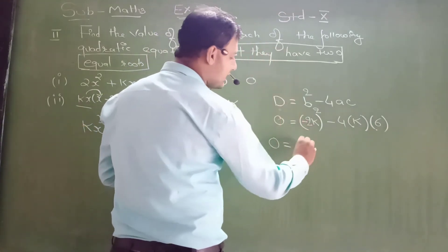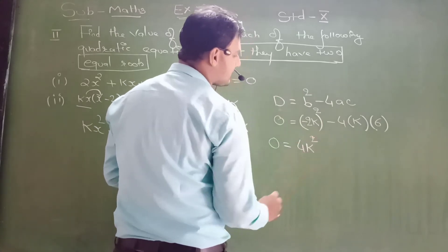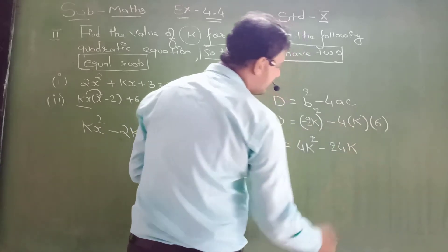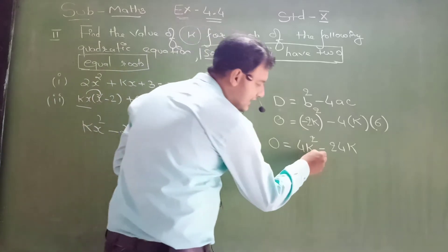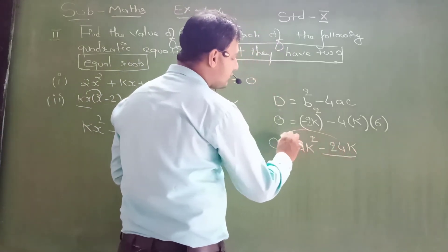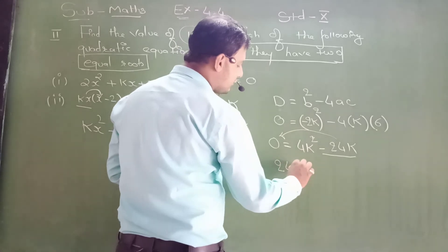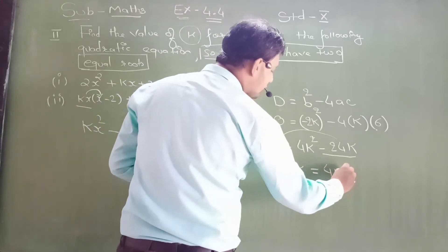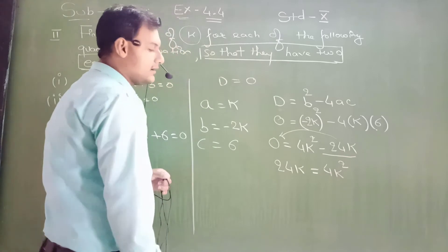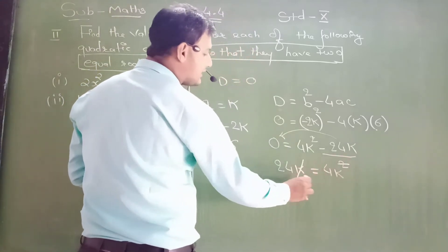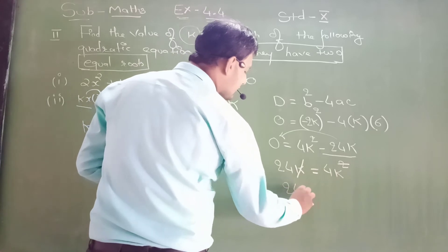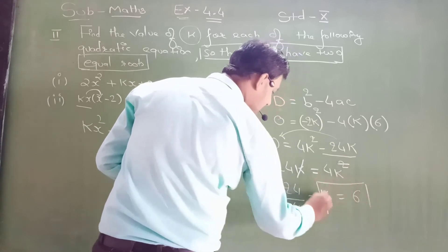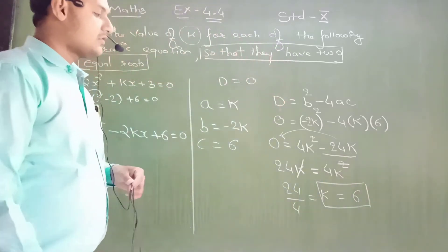What was our formula? D equals b² - 4ac. D equals 0. b² is (-2k)², minus 4, what is a? a is k, what is c? c is 6. Please pay attention. -2 ka square is 4, and k ka square is k². Minus 6 × 4 is 24k. This is negative 24. If negative 24 comes this side, it becomes positive 24k.